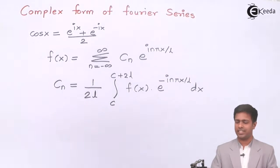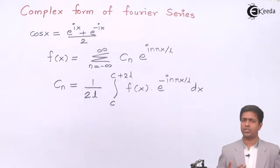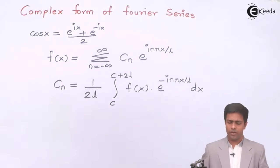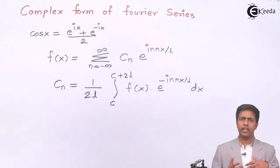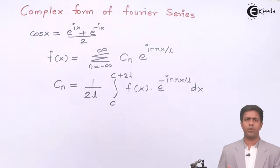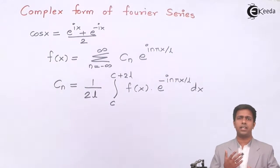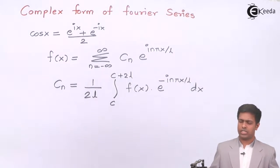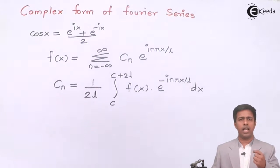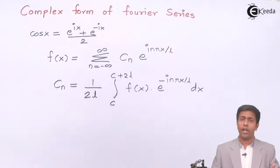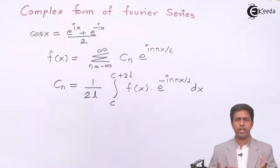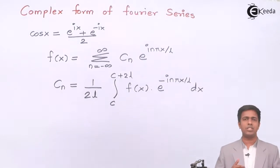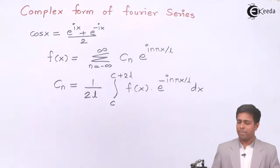You must be wondering why we call it the complex form. It is because we get an imaginary term in the series. Whenever we have a number in the form a + ib, or any number containing an imaginary term, that number is called a complex number. Since this series contains that imaginary term, it is called the complex form of Fourier series. This is the general formula applicable in the range c to c+2l.